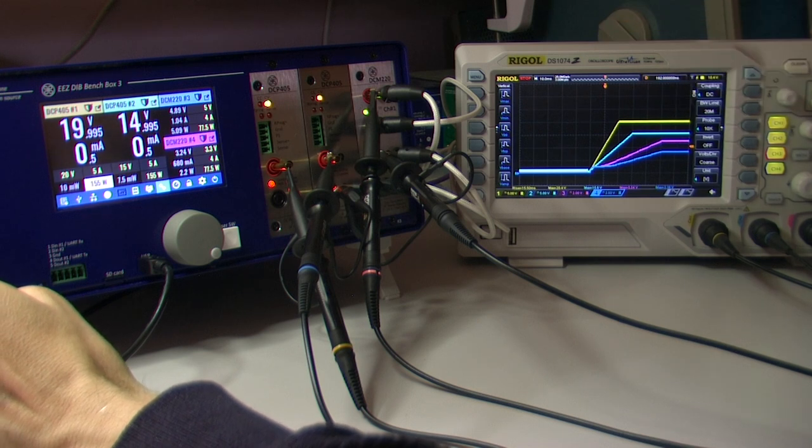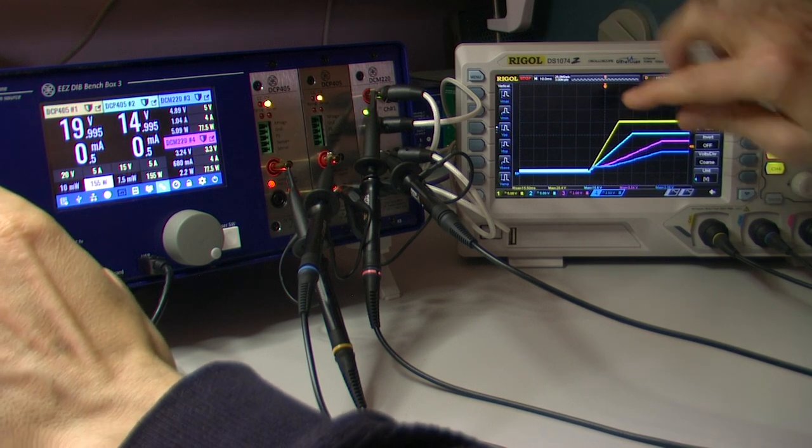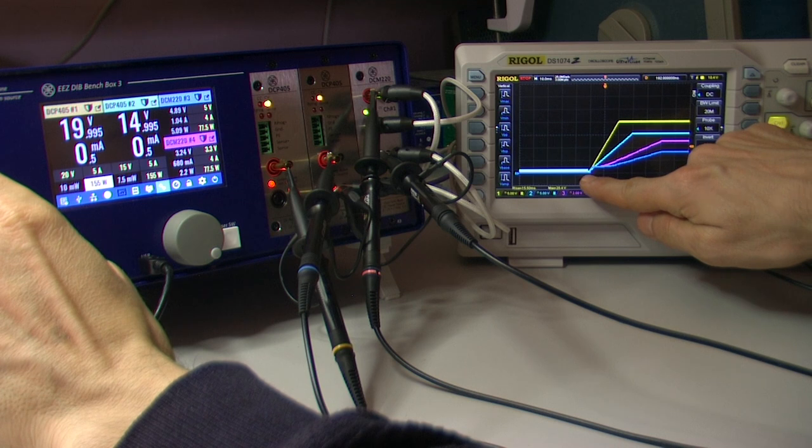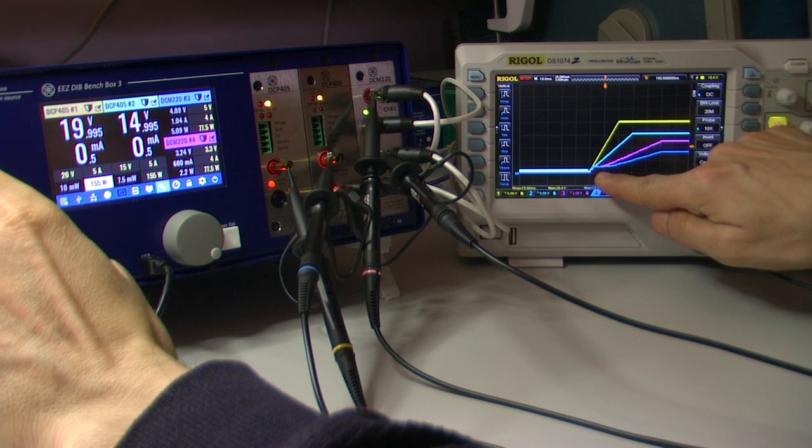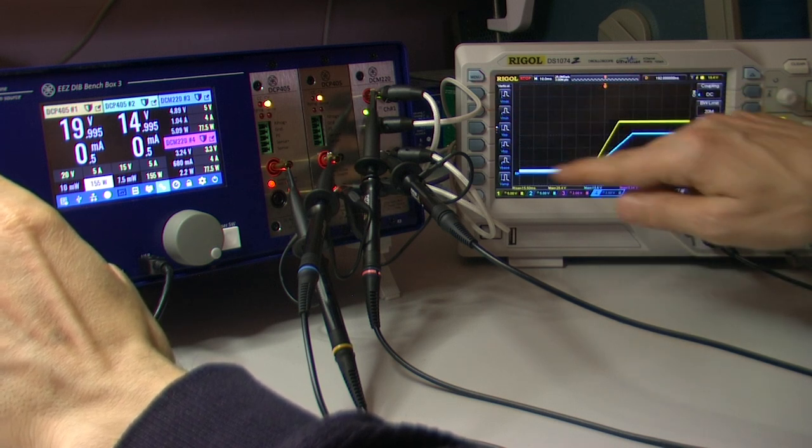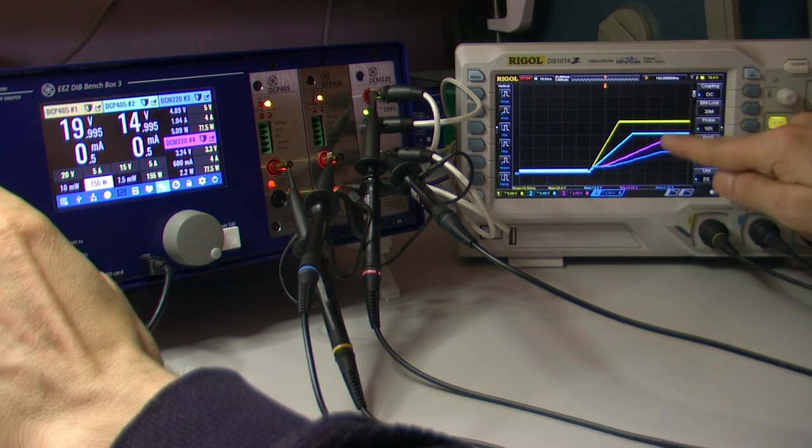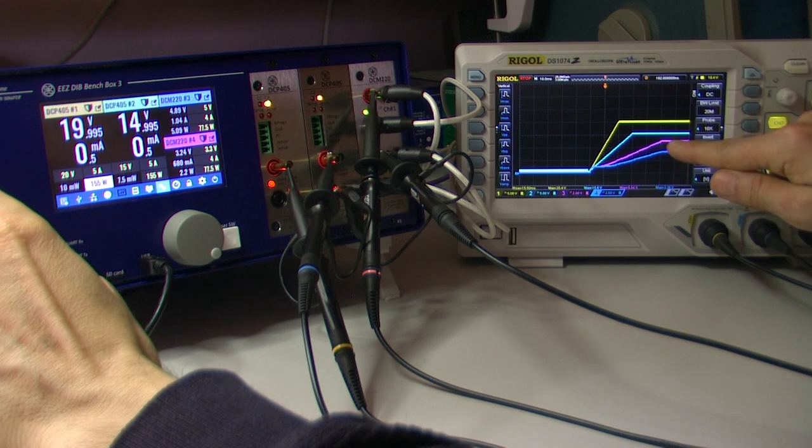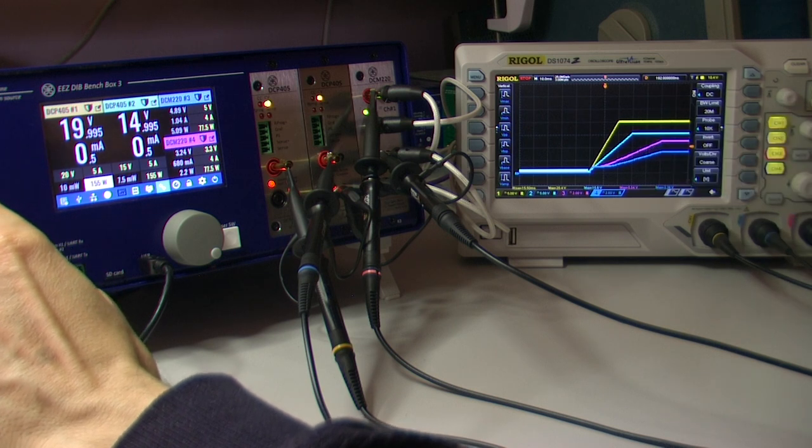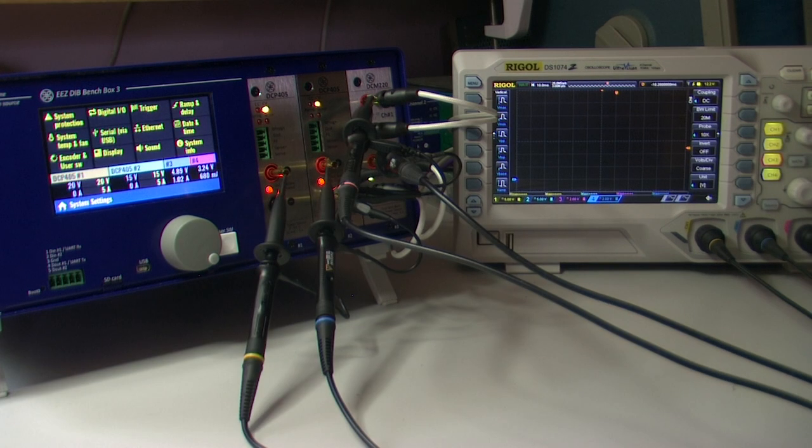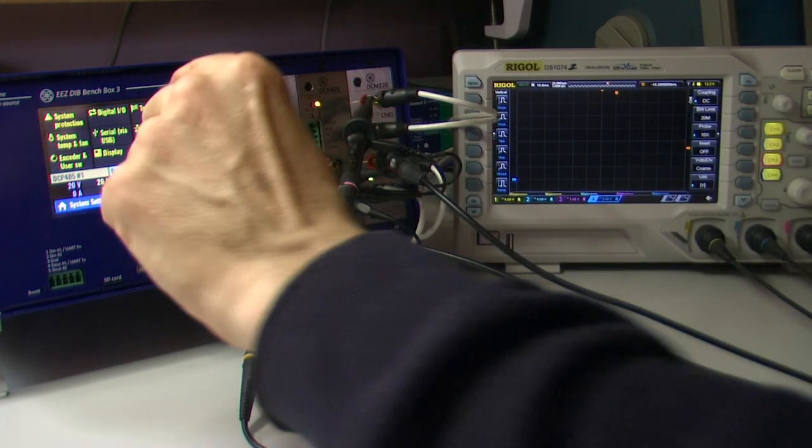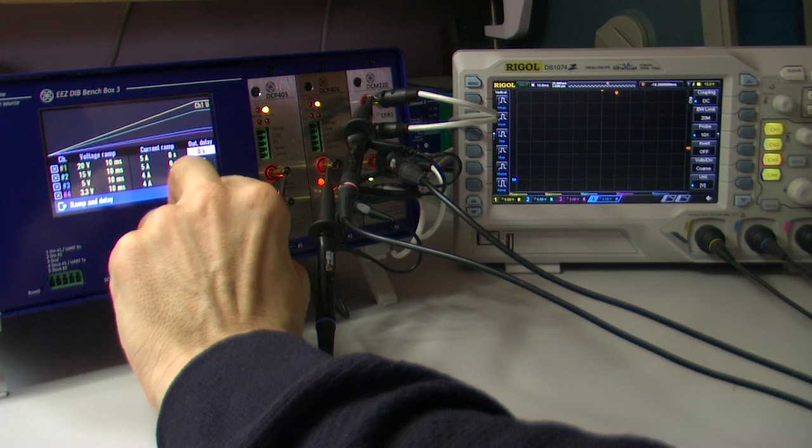Channels three and four cannot go from zero, so they start from 1 volt and rise to 3.3 volts. The other channels rise to 15 and 20 volts. Now we'll see how to add some delays.